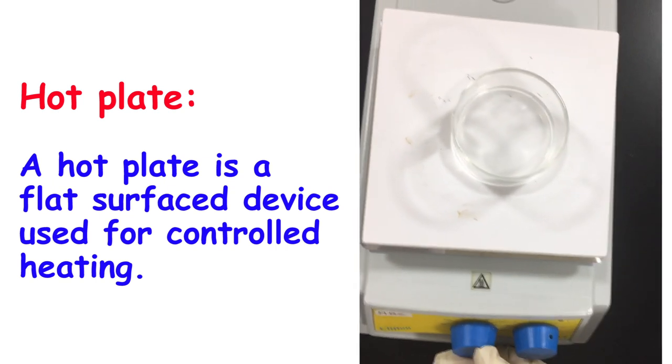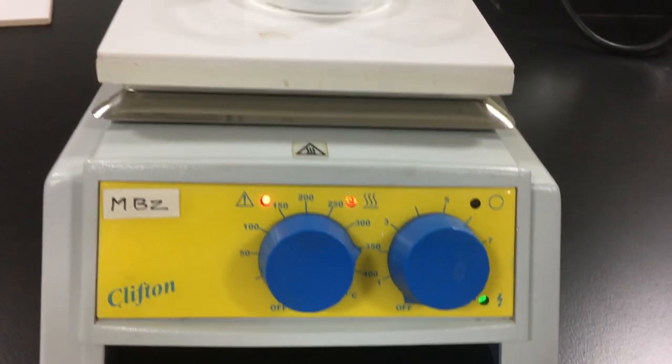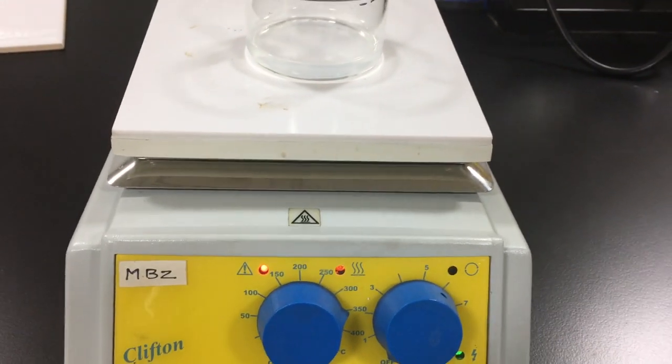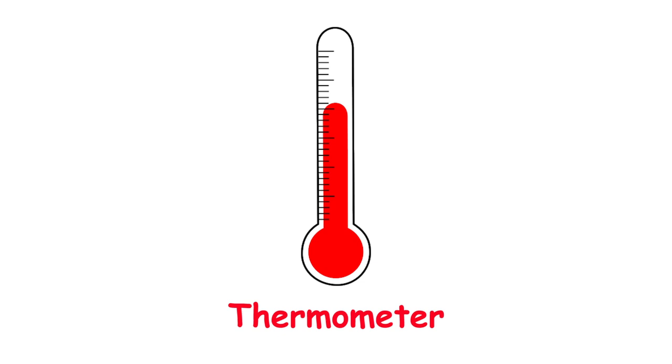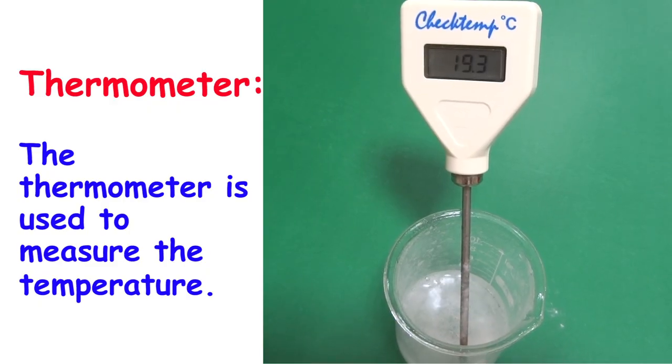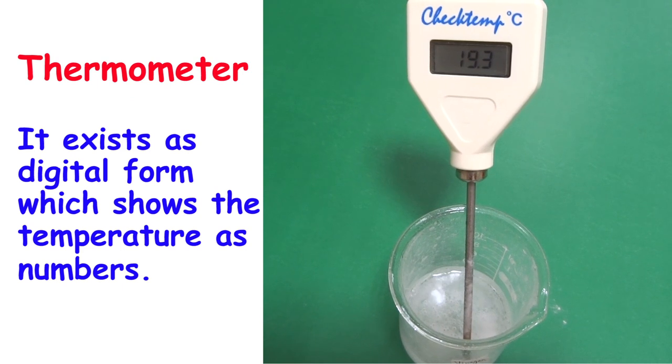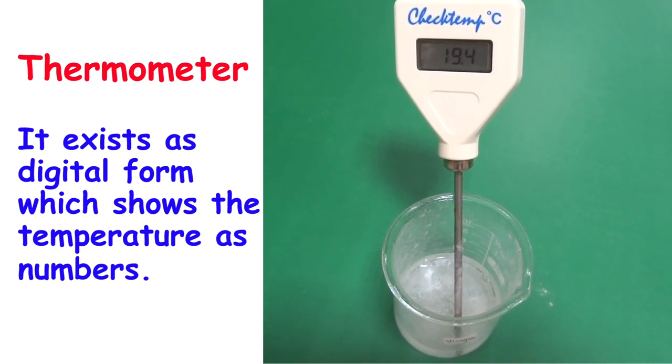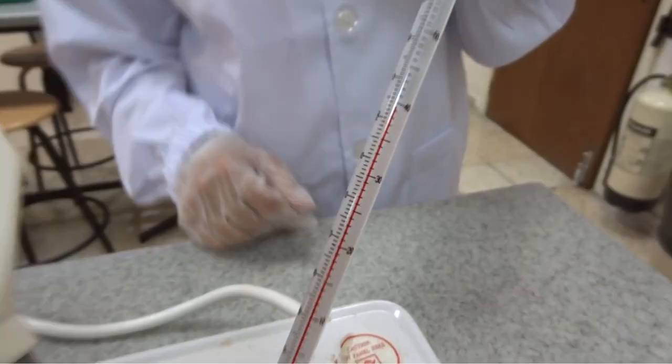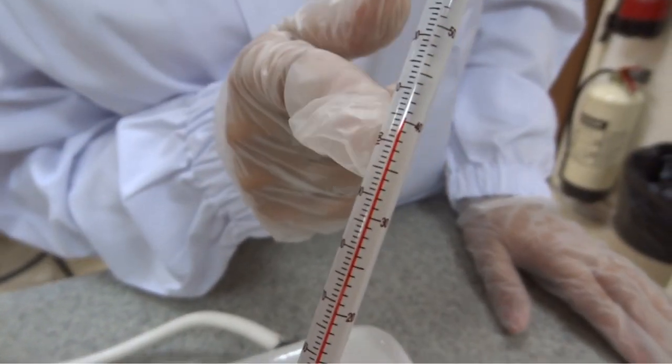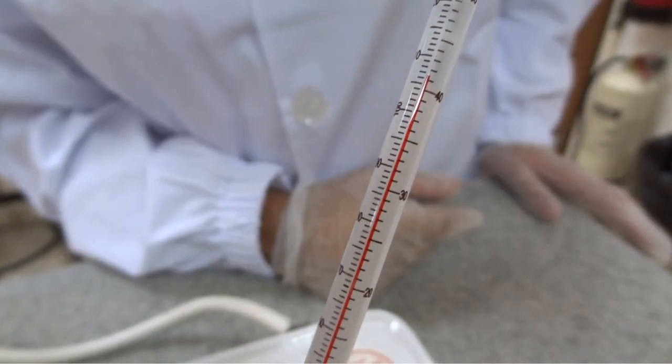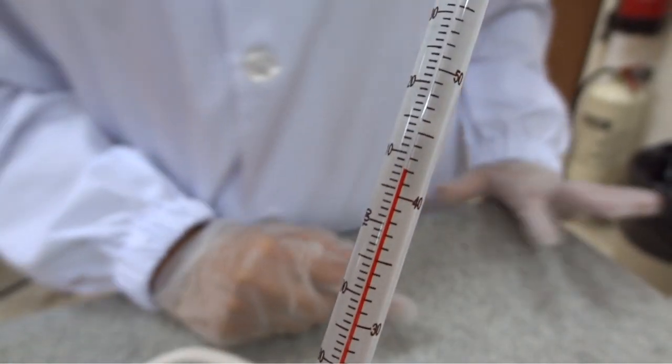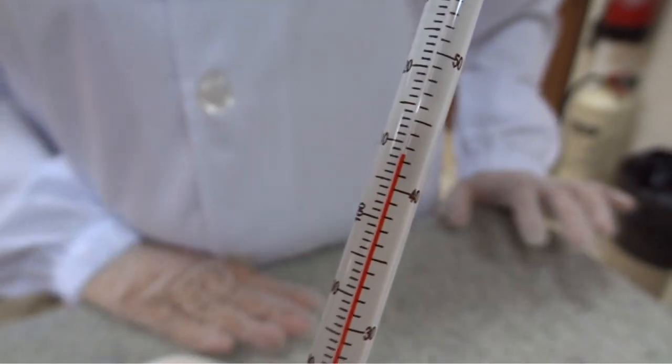The thermometer is used to measure the temperature. It exists as a digital form which shows the temperature as numbers, or the traditional thermometer which contains mercury or alcohol. The liquid will proportionally expand due to heat and show the temperature accordingly.